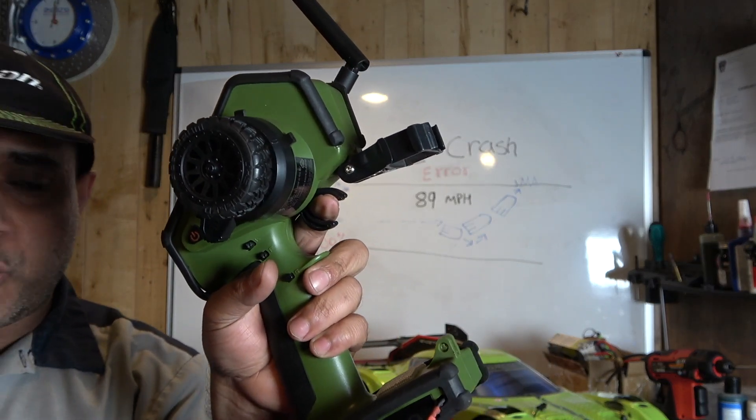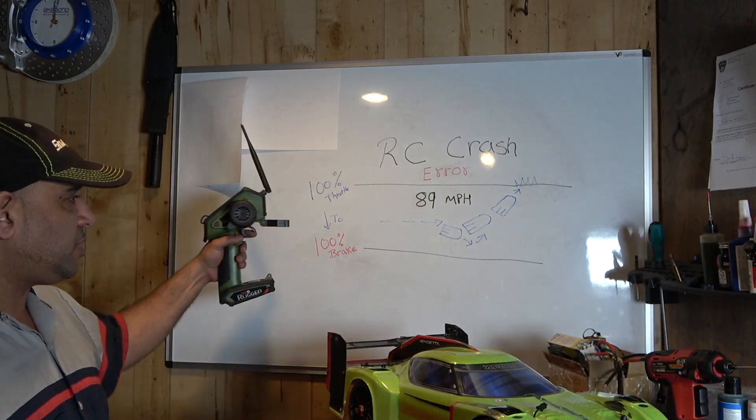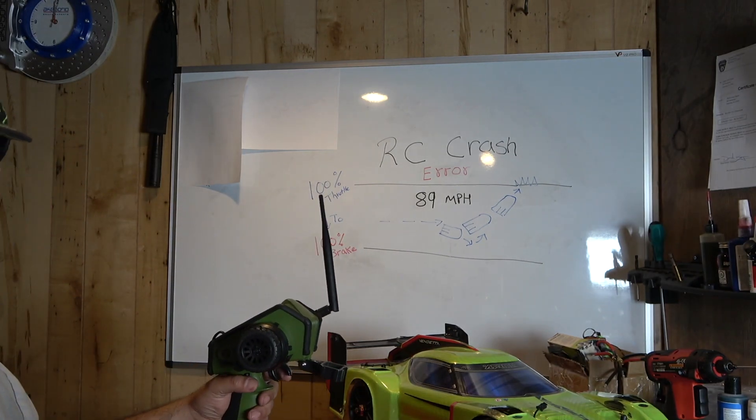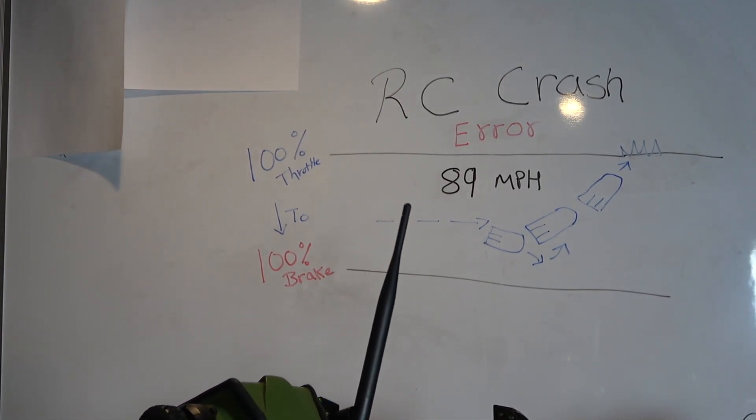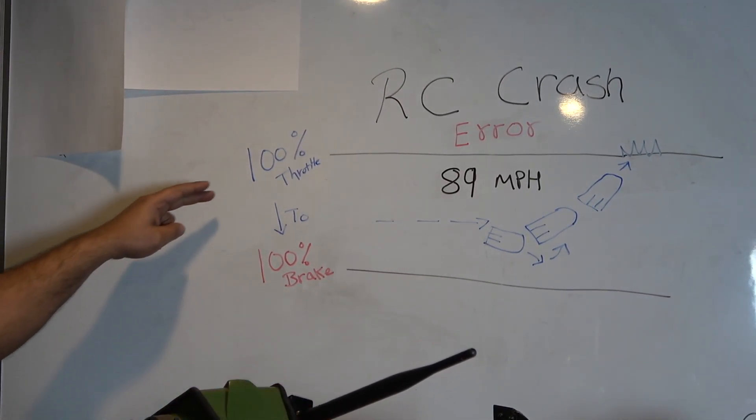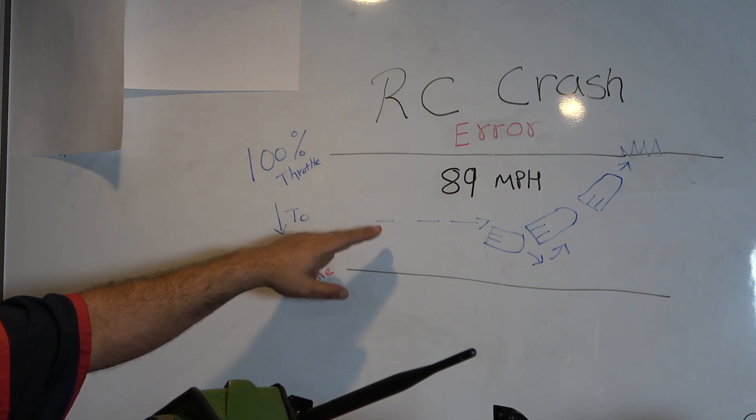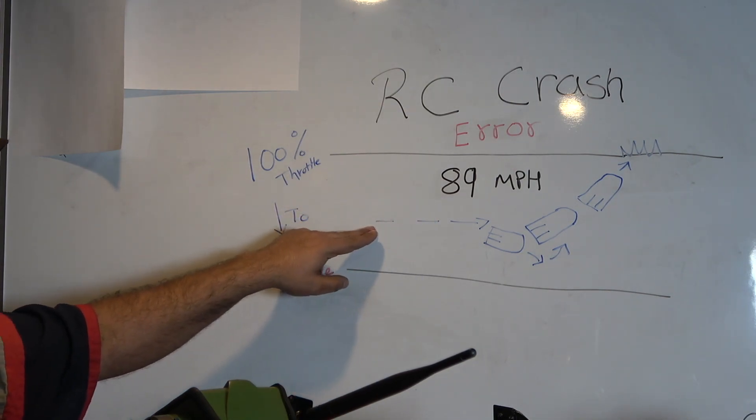So that's what this diagram is about. Let's look at this diagram one more time. Pretty much what happened here was that the Vendetta was going 89 miles per hour.